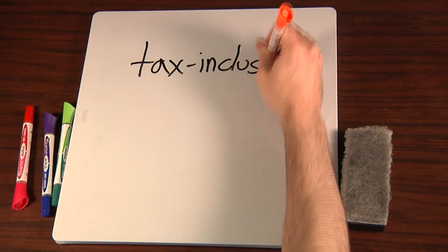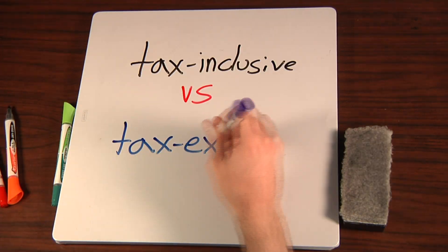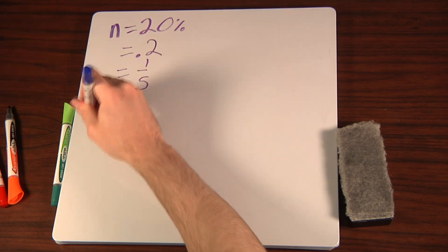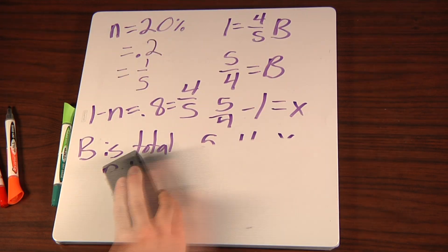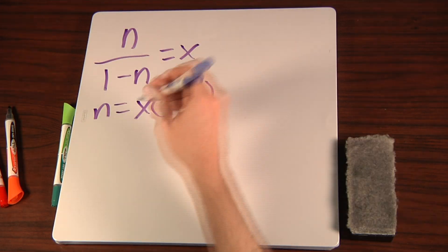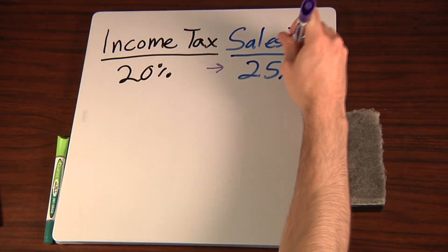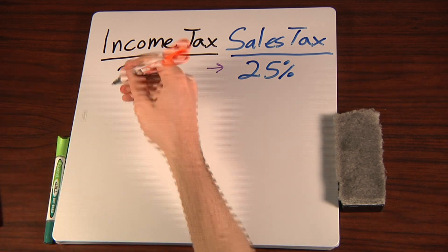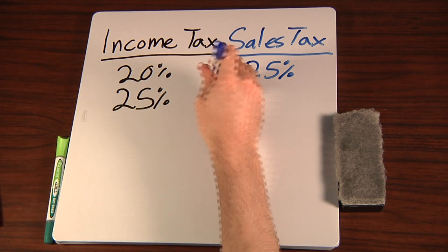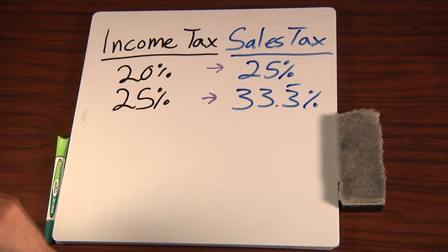So we need to convert between a tax-inclusive rate and a tax-exclusive rate. Here's just how the conversion works using n for the inclusive rate and x for the exclusive rate. Something like a 20% income tax could be replaced by a 25% sales tax, and the conversion can be made the other way if needed. So these relationships exist between the two systems.